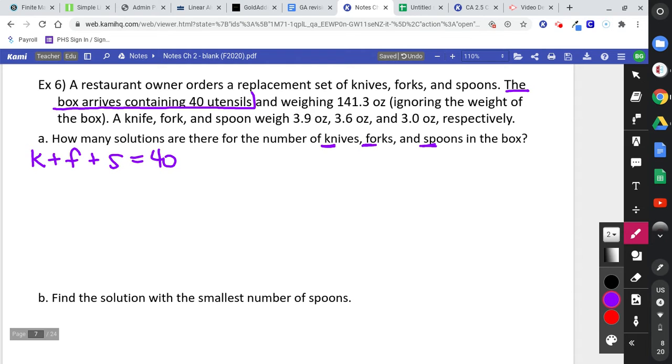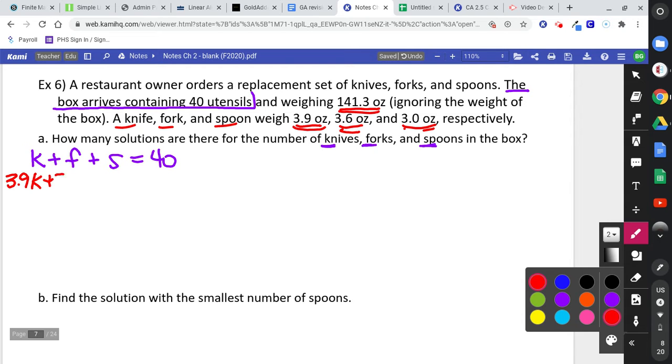The number of knives plus the number of forks plus the number of spoons is equal to 40. So we keep reading, and you see this ounces, ounces, ounces, ounces. You're probably going to put all those ounces in the same equation as well. So it says a knife, fork, and spoon weigh this and this and this, respectively, and this is the total.